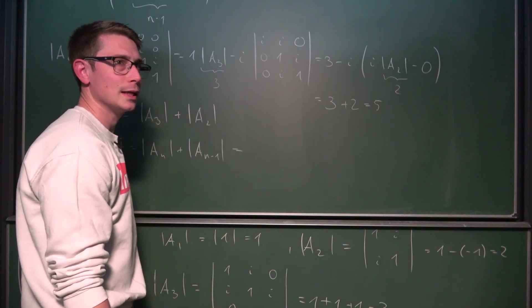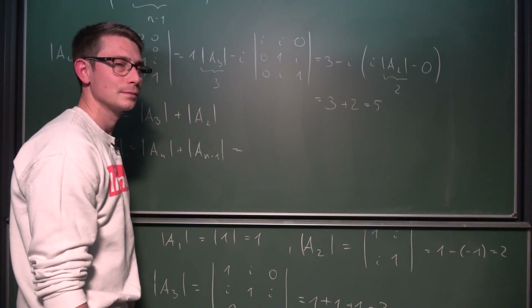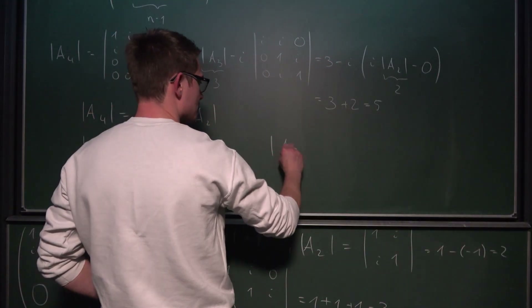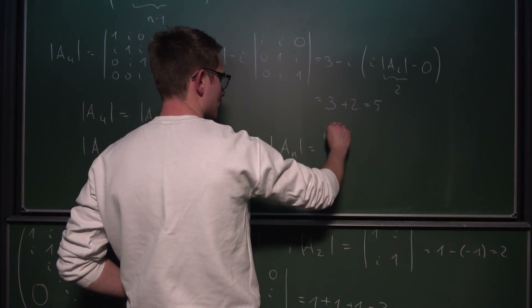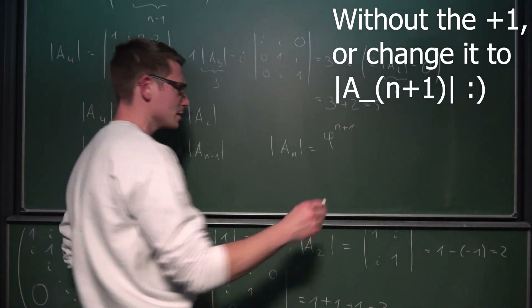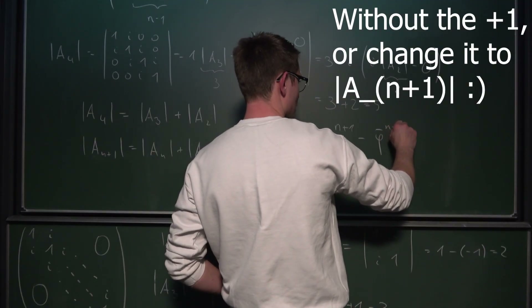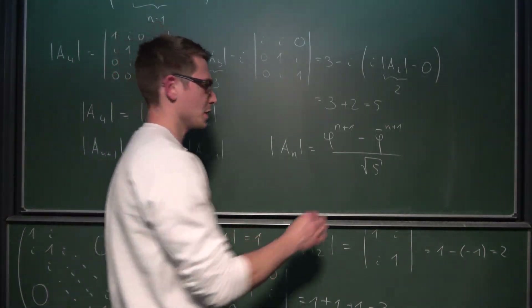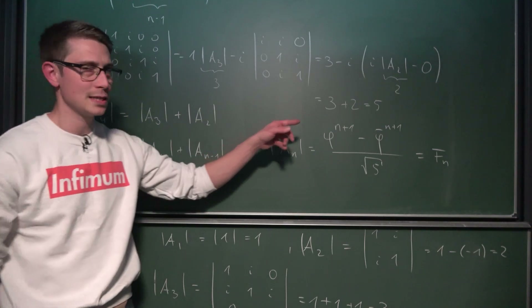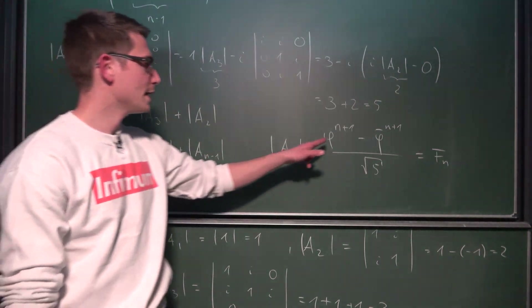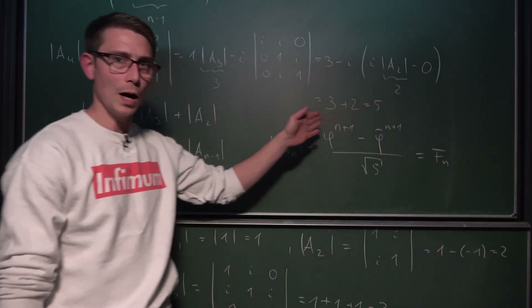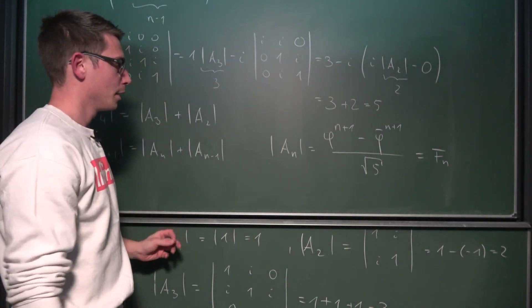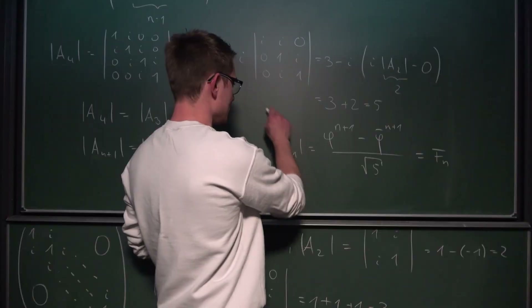So the determinant of An is equal to the nth Fibonacci number, given by Binet's formula: the golden ratio to the (n+1)th power minus the golden ratio conjugate to the (n+1)th power, all divided by the square root of 5. Where the golden ratio is (1 + √5) / 2 and the golden ratio conjugate is (1 − √5) / 2. That should check out — this is my final answer.